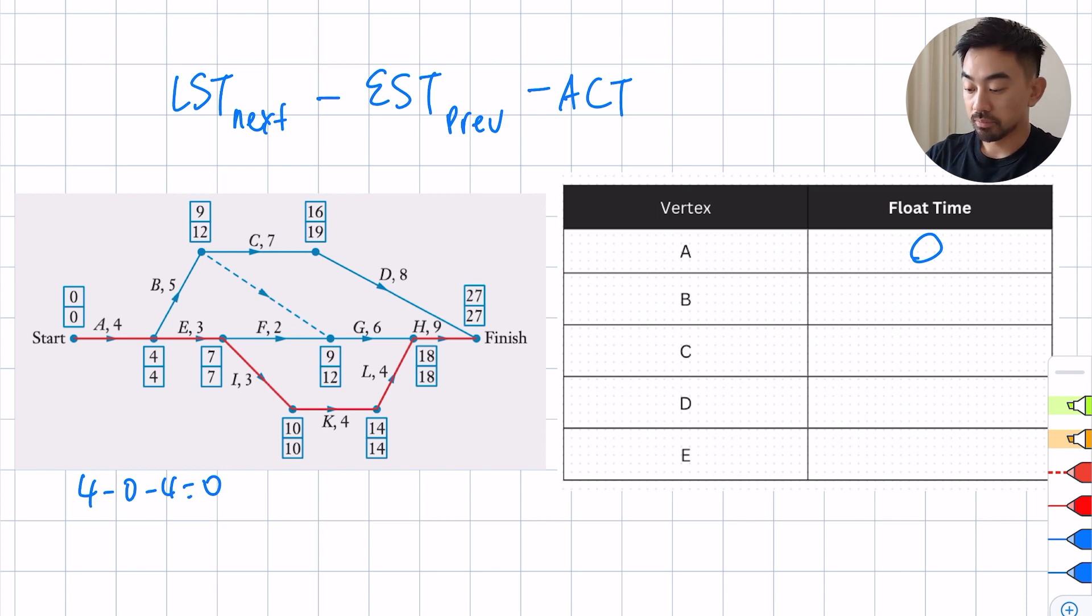Let's look at B. So B is there. I look at the next late is 12 minus 4 minus 5. B is going to be 12 minus 4 minus 5, so I think that is 3. So the float time for B is 3.